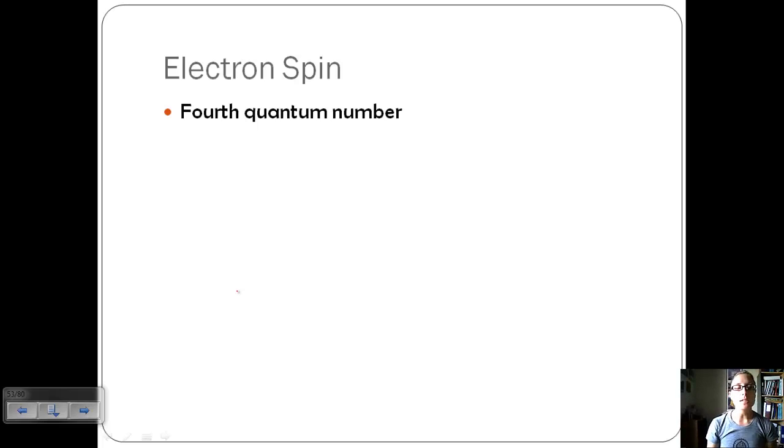First, let's continue our discussion of quantum numbers. We had already talked about the first three, N, L, and M sub L, and then our fourth one is electron spin.